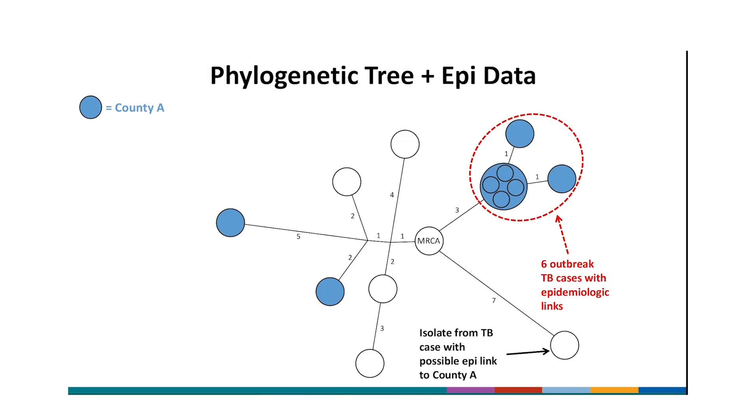This next slide shows the phylogenetic tree and epi data. We received the phylogenetic tree and then overlay epi and clinical data to help us interpret the tree. Eight cases, shaded in blue, were reported by County A. To the right of the MRCA are isolates from six cases. These are circled in red that were already known by County A to be epidemiologically linked. WGS shows these isolates are genetically closely related to each other, meaning that the isolates are zero to two SNPs from each other. Here, WGS helped confirm an outbreak.